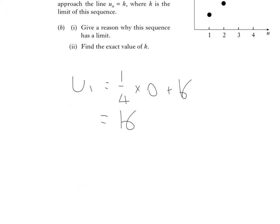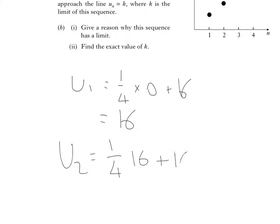Just continue that on for U_2. U_2 will be 1 quarter of U_1 plus 16. So that's 1 quarter of 16 plus 16. 1 quarter of 16 is 4. 4 plus 16 is 20.